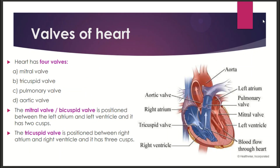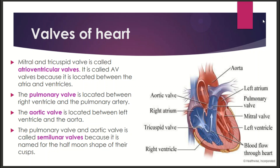The heart has 4 valves: the mitral valve, the tricuspid valve, the pulmonary valve, and the aortic valve. The mitral valve is the bicuspid valve, located between the left atrium and left ventricle. The tricuspid valve is located between the right atrium and right ventricle and has 3 cusps. Bicuspid and tricuspid valves are atrioventricular valves, located between the atria and ventricles.